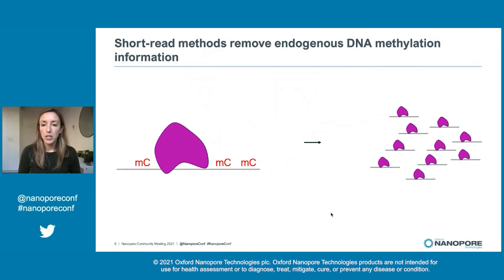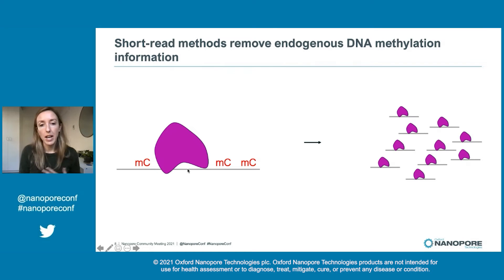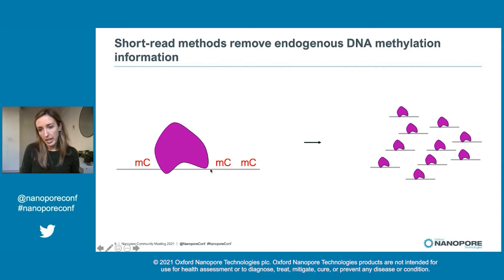These methods also rely on amplification, so you lose endogenous DNA methylation information. Many proteins are regulated by CpG methylation, and their binding can be, for example, inhibited by the presence of CpG methylation at their binding site. Being able to look at protein binding in the context of the local endogenous methylation environment would be very powerful.